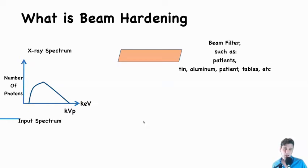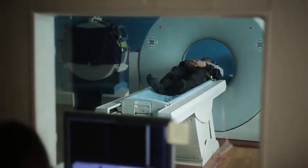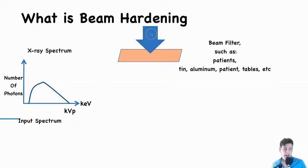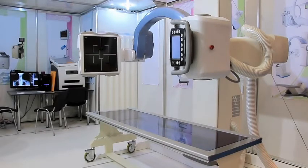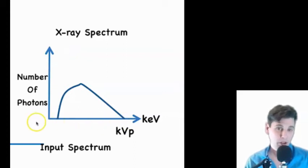What is beam hardening? Beam hardening occurs as x-rays pass through some filter material — that material could be the patient, a table, or the anode itself. X-ray beams produced in medical x-ray tubes are not mono-energetic; they contain many energies, primarily because of the bremsstrahlung interaction.